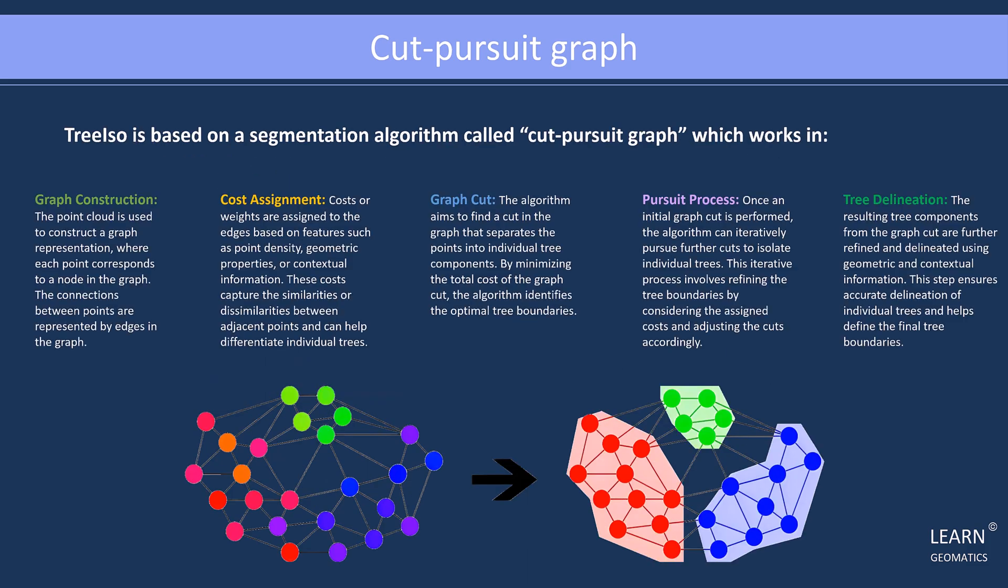The Cut-Pursuit Graph algorithm follows a multi-step process, starting with graph construction. The point cloud is transformed into a graph representation, where each point serves as a node, and the connections between points are represented as edges in the graph.